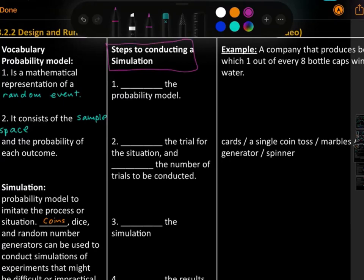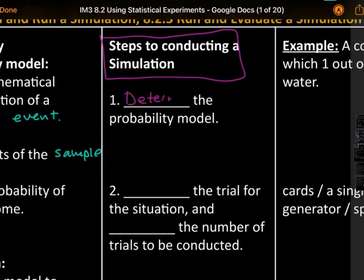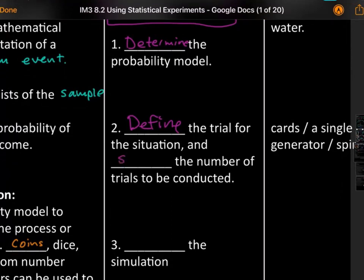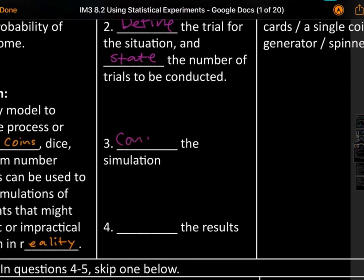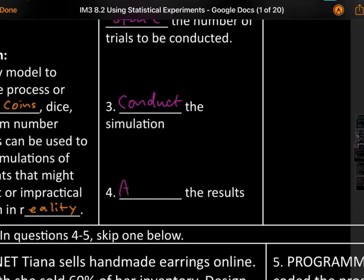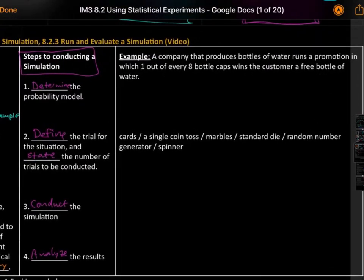So let's talk about steps to conduct a simulation. The first thing you need to do is determine the probability model. Number two, define the trial for the situation and state the number of trials to be conducted. Number three, we need to conduct or actually do. And then number four, we have to analyze the results.